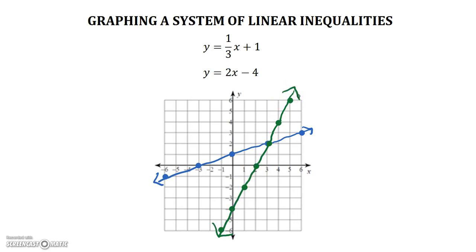Now if you remember, the solution to a system of equations was the point where the lines crossed. So in this case, the solution would be the point three, two, because they cross at the point three, two. Inequalities, if you remember when we graph them, we have that extra step where you have to shade them. Just like equations where the solution is where the lines cross, in a system of inequalities, the solution is going to be where the shading crosses.